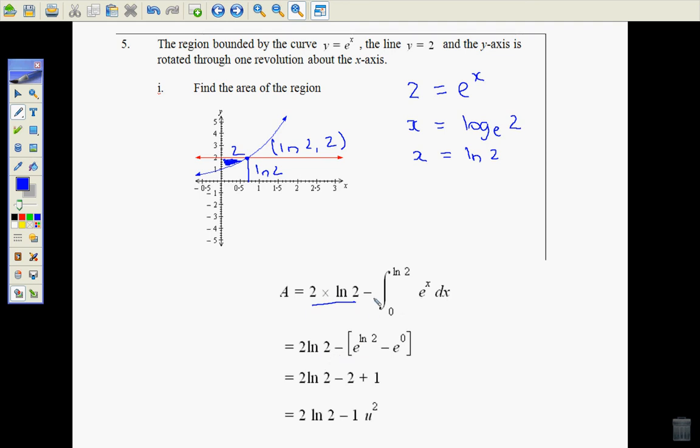So 2 natural log of 2 I leave in exact form. Now I'm going to subtract the integral of e to the x which would be e to the x. So this part here would integrate to give me e to the x between 0 and natural log of 2. And then I do the substitution natural log of 2 into the x and then 0.